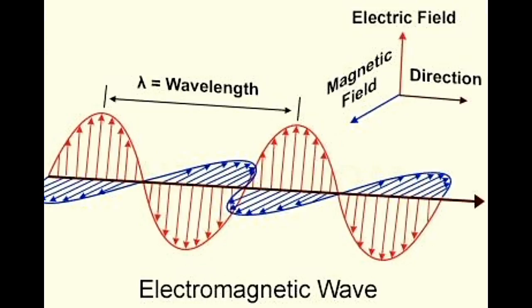Any charged object has an electric field associated with it. When that electric field changes, a changing magnetic field is created.